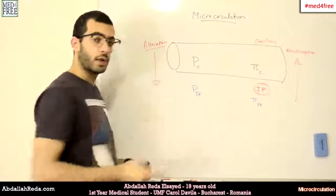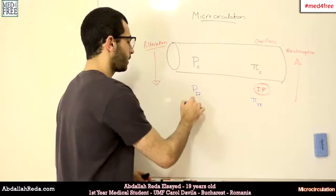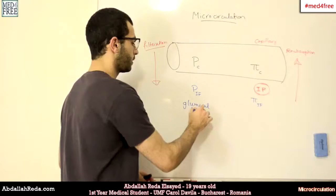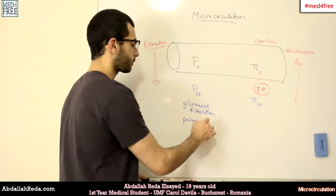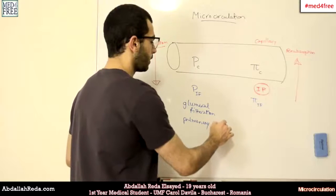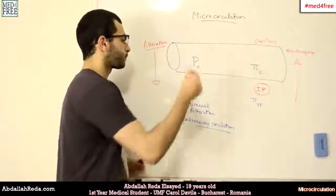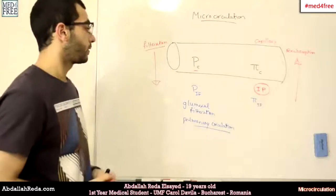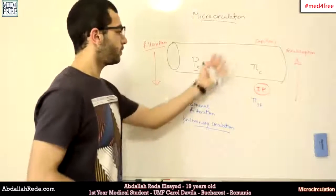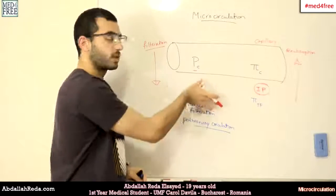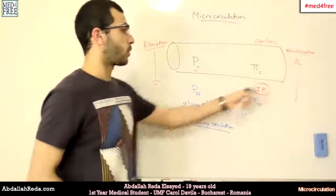The pressure of the interstitial fluid is very hard to measure, but it can be useful in cases such as pulmonary edema. It is not as important as the pressure inside the capillary, but if it increases, the thrust on the interstitial side will increase, leading fluid to move into the capillary. So it is pro-reabsorption.